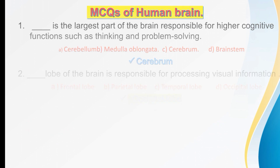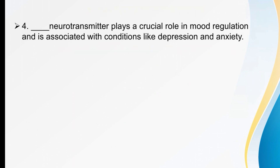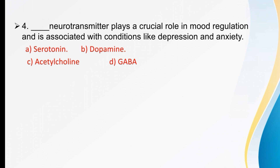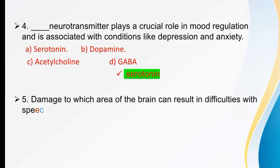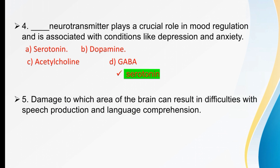Which neurotransmitter plays a crucial role in mood regulation and is associated with conditions like depression and anxiety? Options are serotonin, dopamine, acetylcholine, and GABA. The right option is serotonin.